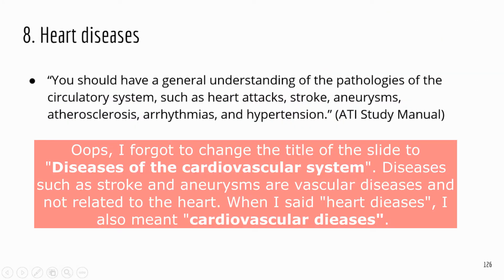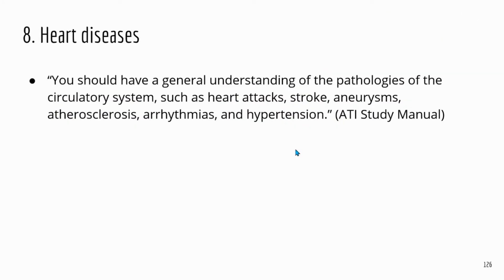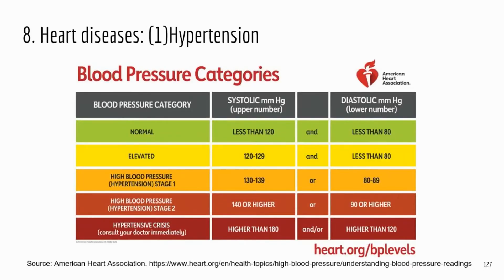The last topic is heart diseases. There are a few diseases mentioned in the study manual that you are expected to know: heart attack, stroke, aneurysm, atherosclerosis, arrhythmia, and hypertension. Let's talk about hypertension first. Hyper means high, and tension refers to pressure, so this is when you have higher-than-normal blood pressure.